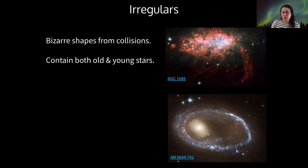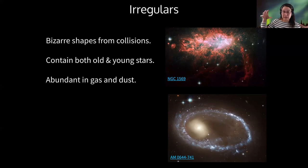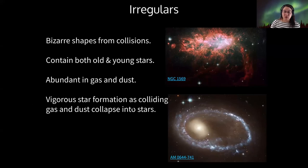Irregulars tend to contain both old and young stars. The reason for this is that the galaxies that collided to create the irregulars had stars in them in the first place. The collision itself generates new stars as the gas and dust in each individual galaxy comes together and collapses. We see lots of new stars forming in irregulars, and also lots of old stars that were there in the original galaxies.